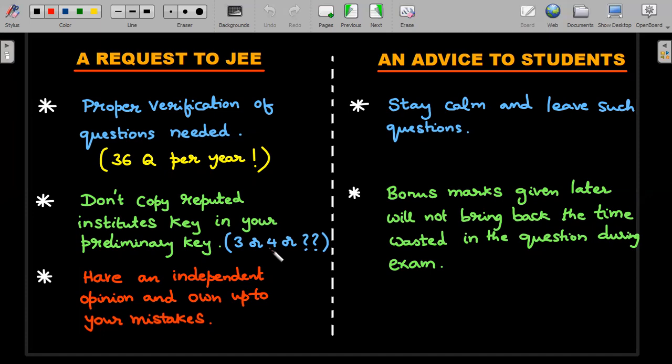If everyone had sat down properly, including the JEE people and the famous institute people, and seen the question with no bias, they would have realized the answer is not solvable. It's dependent on the distance of that eye. Just because institute A gives three, institute B gives four, then to please everyone or make sure there's no demand from different people, they just give every key. They should have an independent opinion and own up to your mistakes. We all commit mistakes.